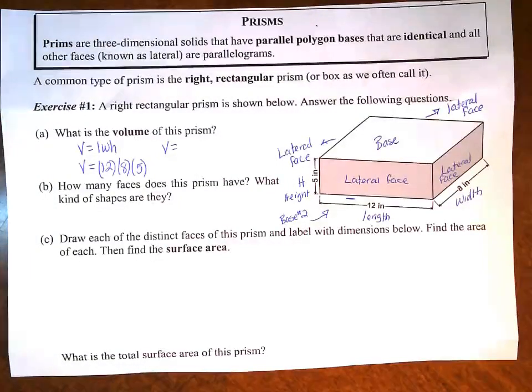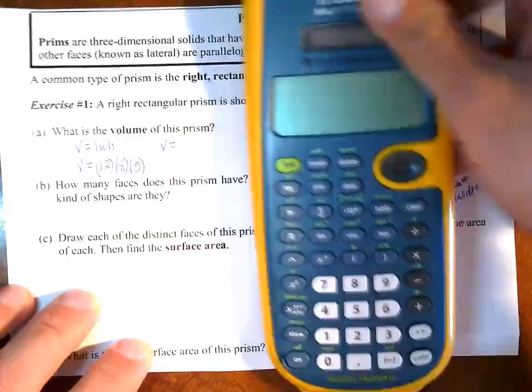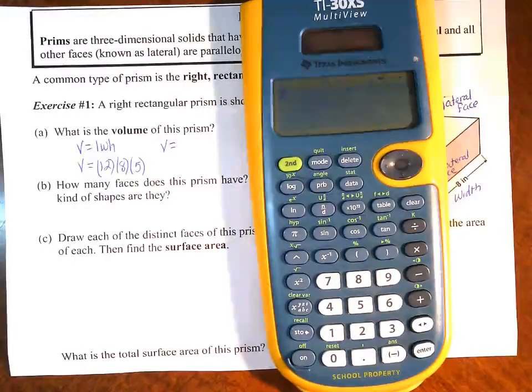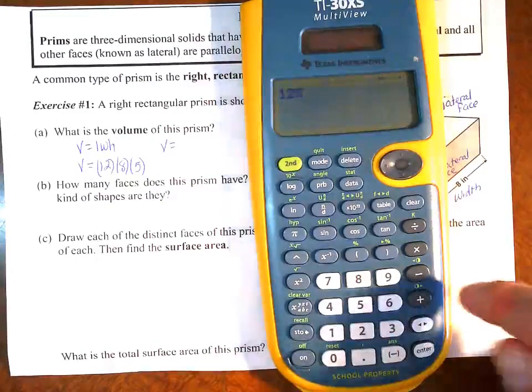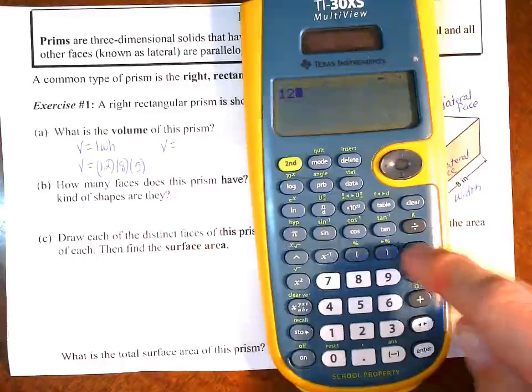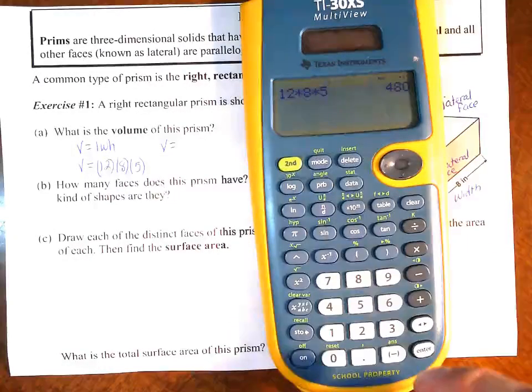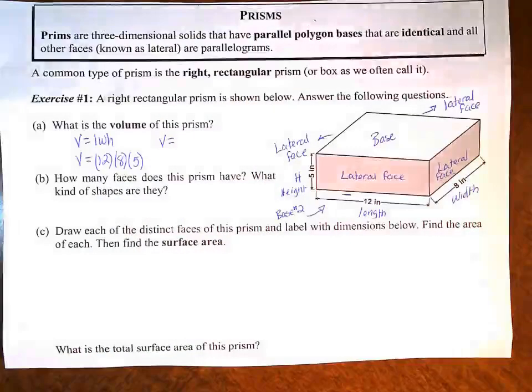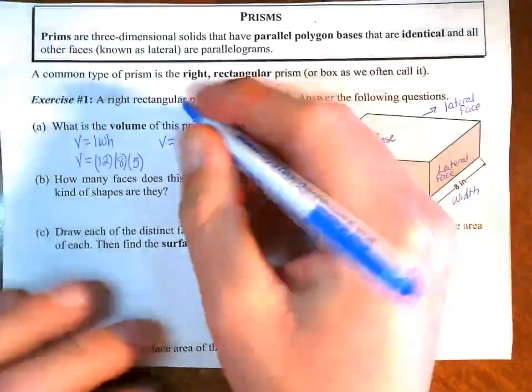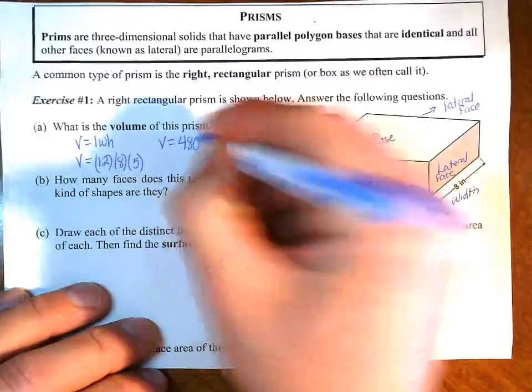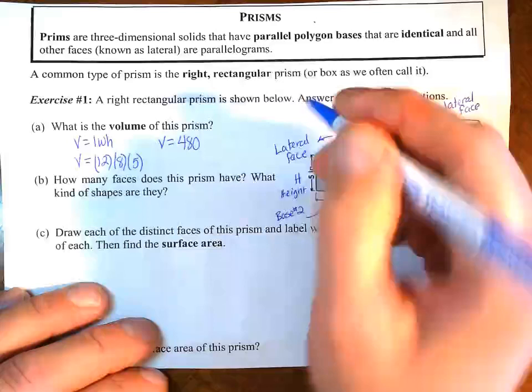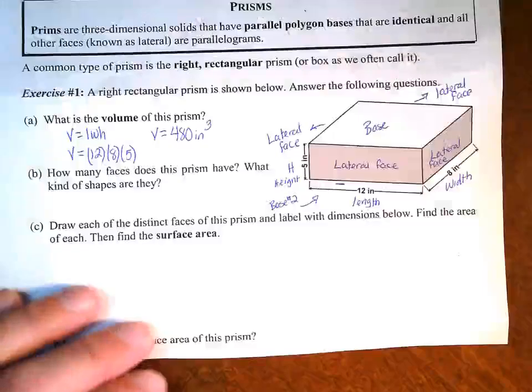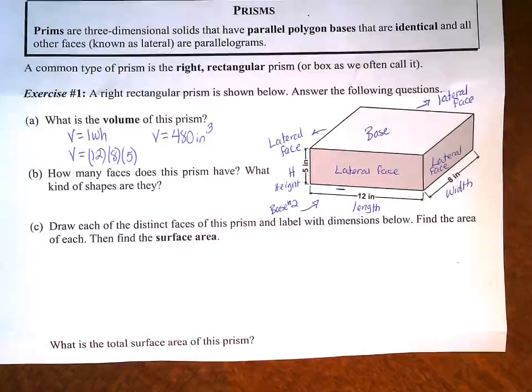We'll get our calculator out, and we'll go through and calculate that. Like I said, we're dealing with three dimensions. Like, you guys who are gamers out there, everything's in the three-dimensional world. Everything you see in front of you is the three-dimensional world. So our volume of this box would be 480 inches cubed, okay? So that's our volume.